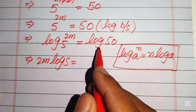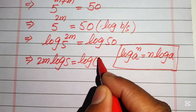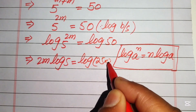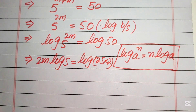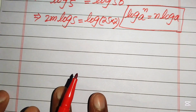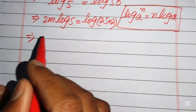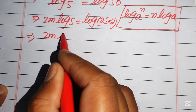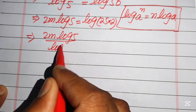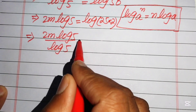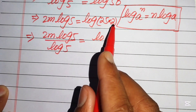We rewrite log(50) as log(25 times 2), since 25 times 2 equals 50. To isolate m, we divide both sides by log(5), giving us 2m equals log(25 times 2) divided by log(5).